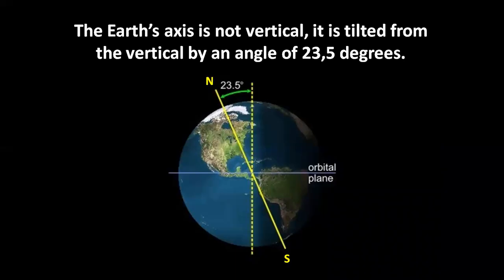The Earth's axis is not vertical. It is tilted from the vertical by an angle of 23 and a half degrees.